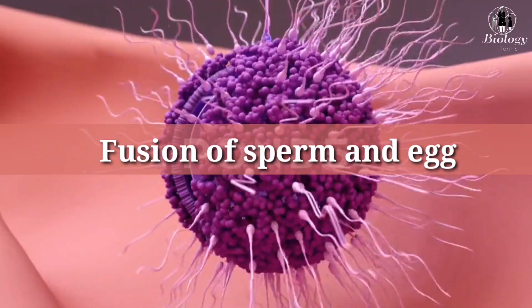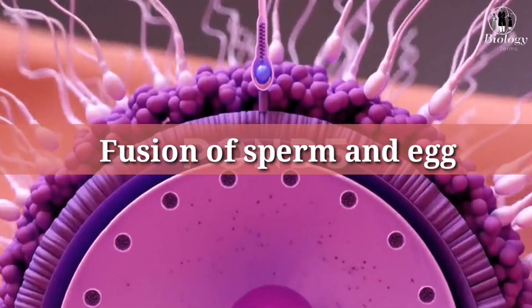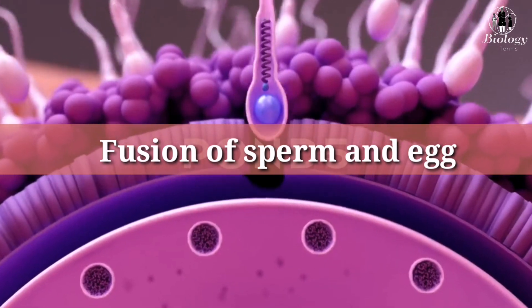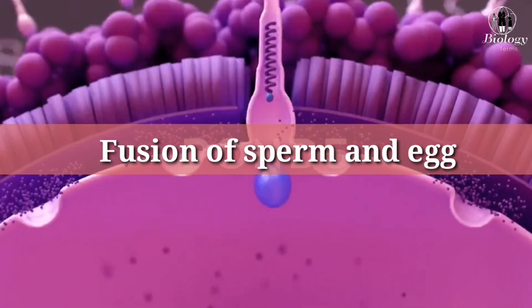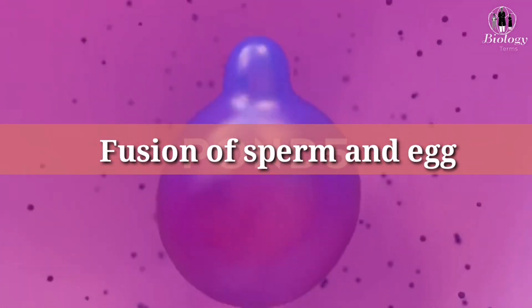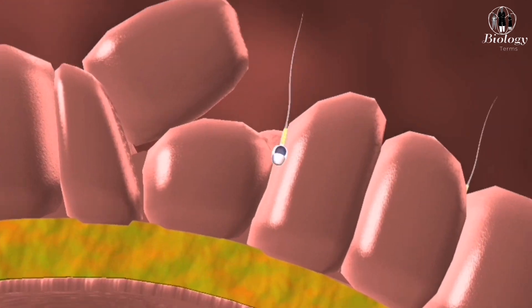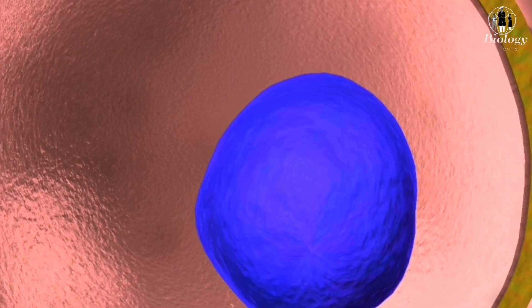When the sperm cell reaches the egg, it penetrates the outer layer of the egg and releases its genetic material. Once the genetic material from the sperm cell and the egg cell combine, a zygote is formed.